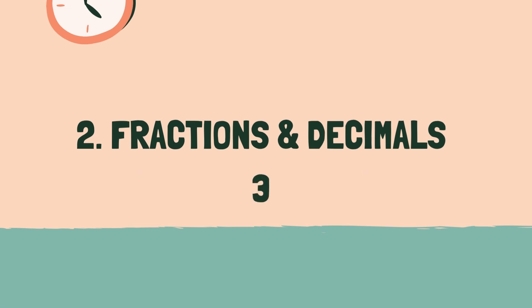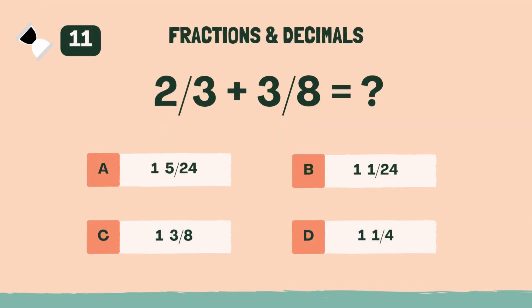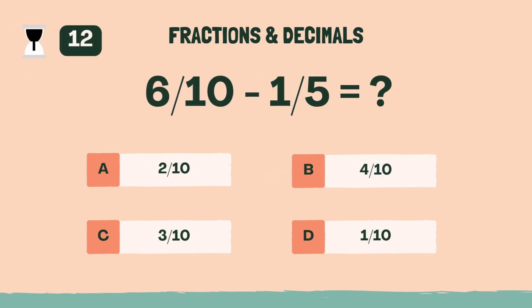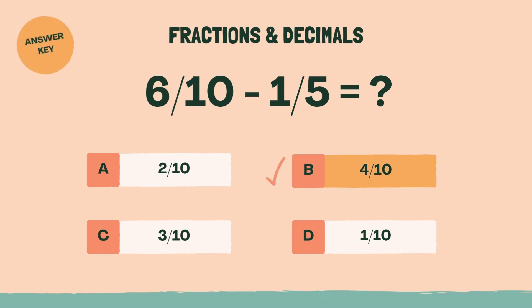Are you ready? 3, 2, 1, go. What is 2/3 plus 3/8? The answer is B, 1 and 1/24. What is 6/10 minus 1/5? The answer is B, 4/10.